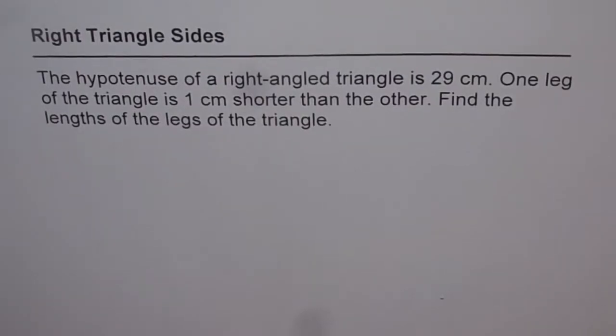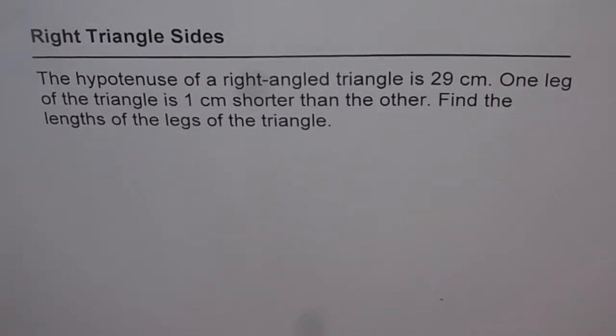Let's try to find the right triangle sides. The question is, the hypotenuse of a right angle triangle is 29 cm. One leg of the triangle is 1 cm shorter than the other. Find the length of the legs of the triangle.